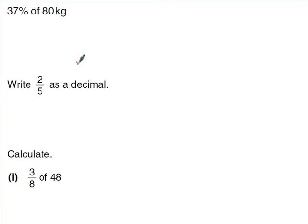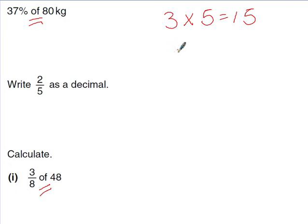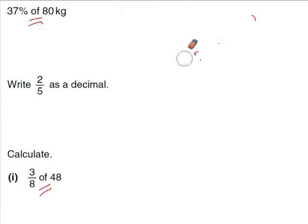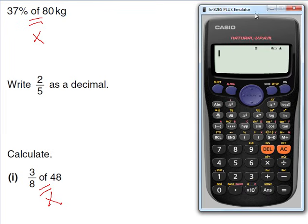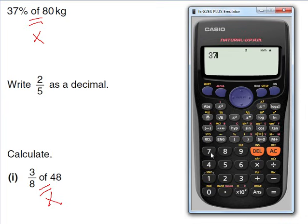Now for percentages and fractions of amounts, the key thing to understand is that the word 'of' in maths means multiply. For example, three lots of five is 3 × 5 = 15. So for a question like '37% of 80 kilograms,' we can use 'of' meaning times to work it out in one step on the calculator.